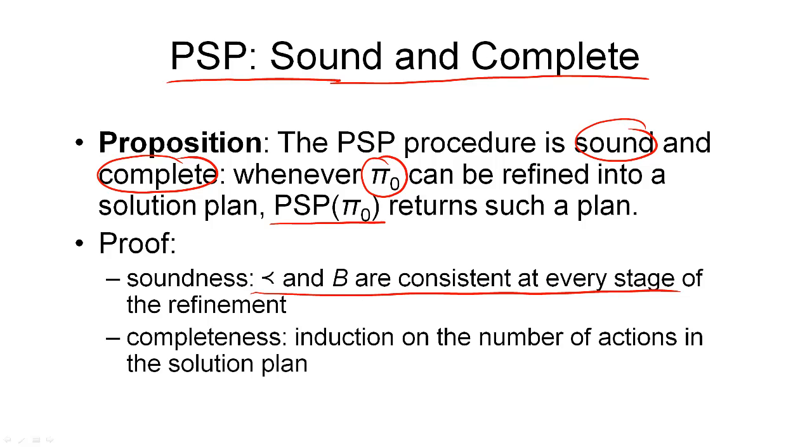And completeness can also be shown by induction, this time induction on the number of actions in our solution plan. We start off with our initial plan that contains two actions, the two dummy actions. And then we show that for every plan that is one action bigger, there exists an execution trace of our non-deterministic algorithm that can find that solution plan.